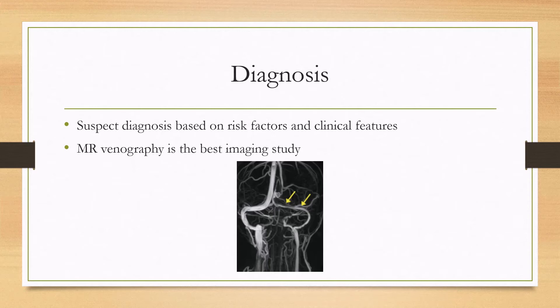The diagnosis is suspected based on risk factors and clinical features, and when suspected, MR venography is the best imaging study to order. As you can see here, on the transverse sinus on this side there is much less opacification than on the other side, meaning there could be a venous sinus thrombosis on that side.